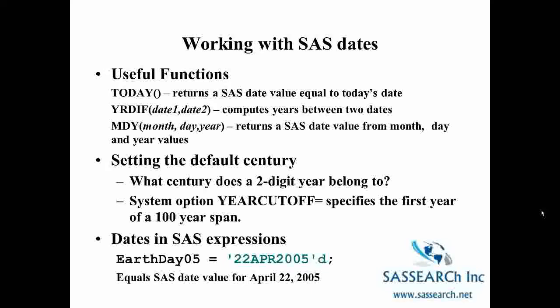We're also going to talk about how SAS handles two-digit years. By default, if SAS sees a two-digit year, it assumes it is between the years 1920 and 2019. So if you have a two-digit year of 03, SAS is going to assume that year is 2003. There is an option, though, to change the 100-year span using a system option called YEARCUTOFF, which specifies the first year of the 100-year span. So if we say YEARCUTOFF=1900, then the 100-year span goes from 1900 to 1999.